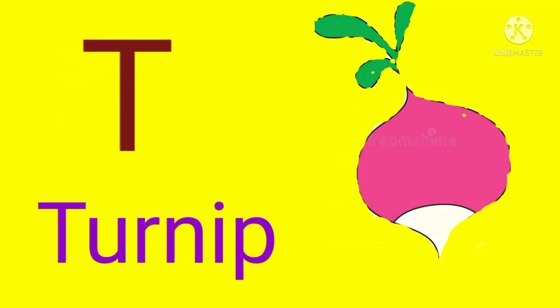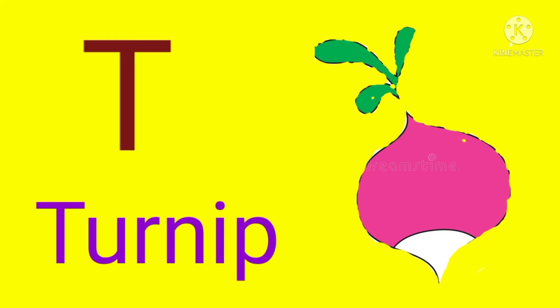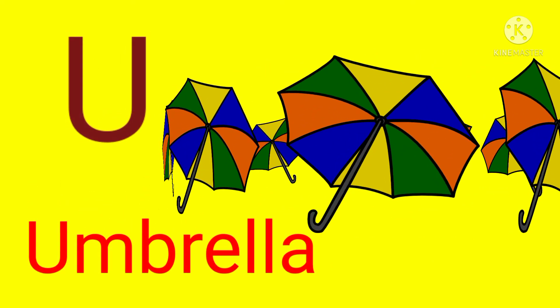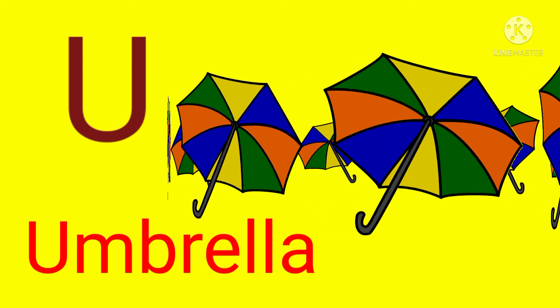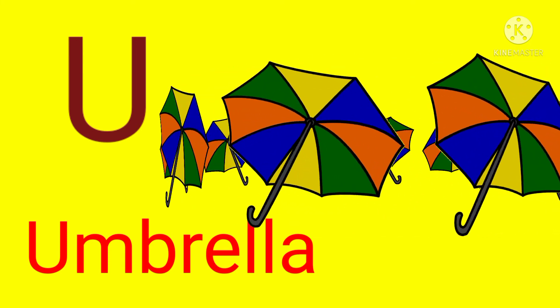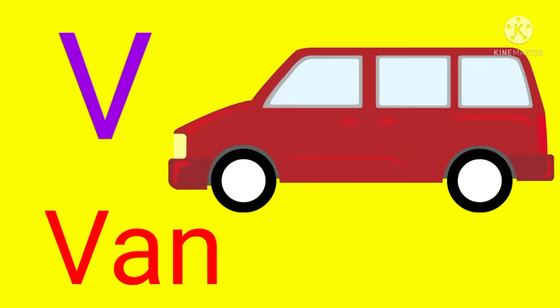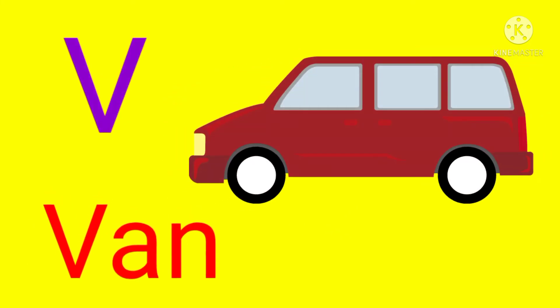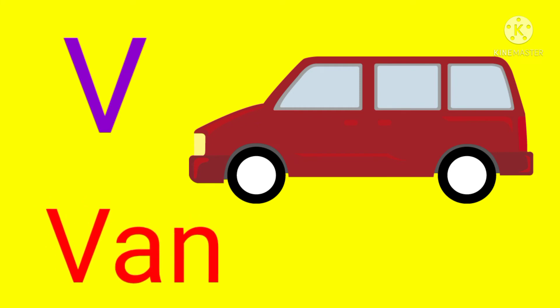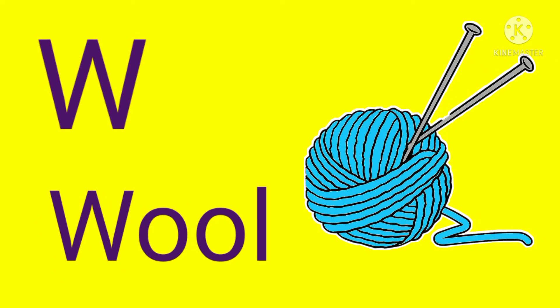T, T for turnip. U, U for umbrella. V, V for van.